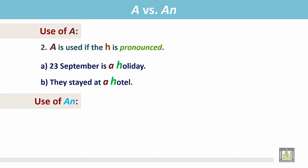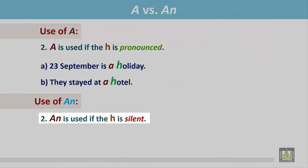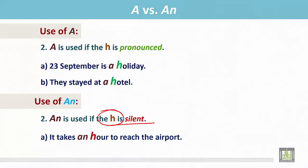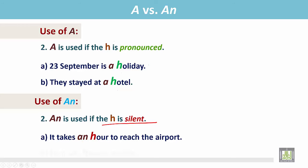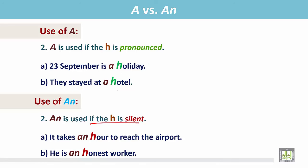Use of AN. AN is used if the H is silent — the word begins with the letter H but it is not pronounced. It takes an hour to reach the airport. The word hour begins with the letter H but it is silent, so we write AN before the word hour. He is an honest worker. The word honest begins with the letter H and this H is silent, so we write AN before the word honest.